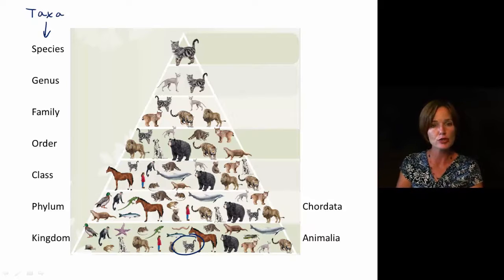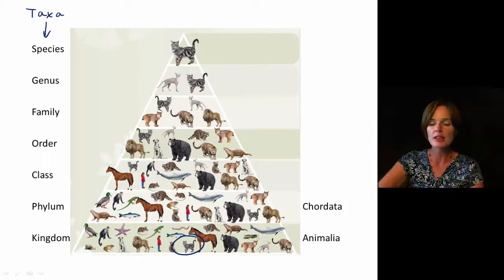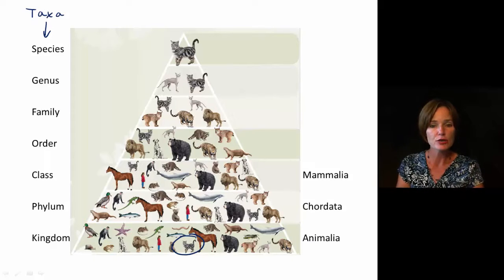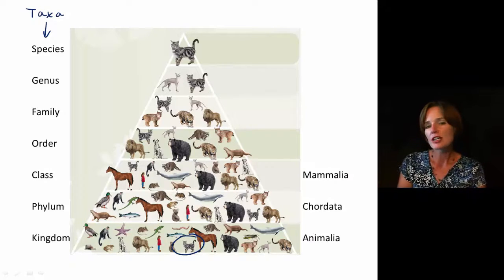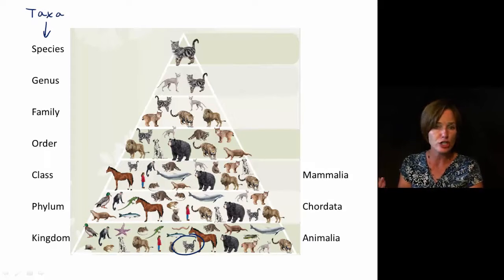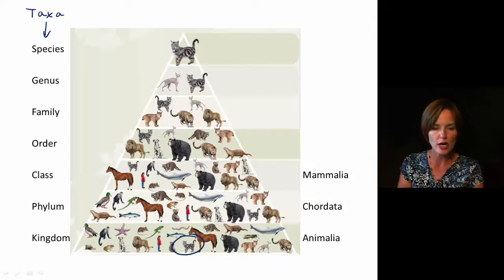Certain individuals within that same phylum will fall into the same class. The class that the cat falls into is Mammalia. Mammalia is named for the presence of their mammary glands. So that is one characteristic that they do all share in common with each other. They do have some other shared characters as well.